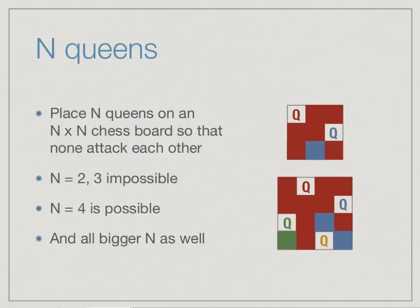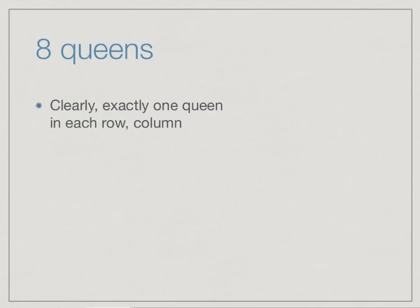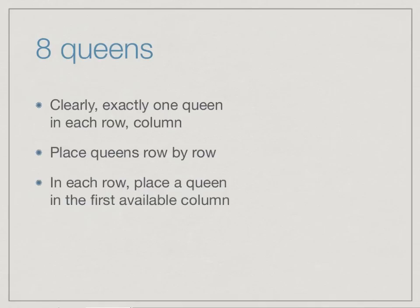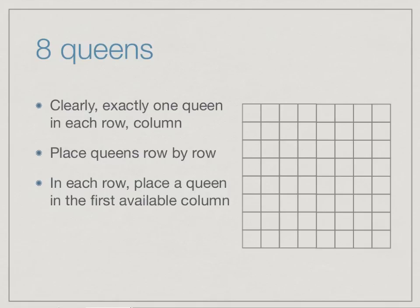To find a solution for n ≥ 4, the first thing we know is that there can be exactly one queen in each row and each column, because queens attack the row and column on which they lie. Since eight is the classical chessboard size, let's do an example for eight queens. We place queens row by row — there is exactly one queen per row — putting each queen in the first available column given the queens already placed.